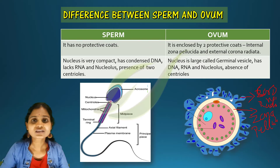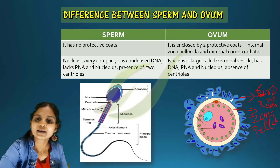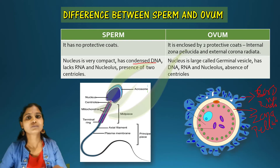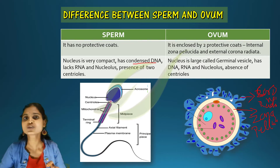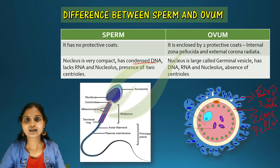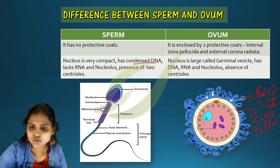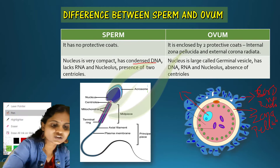The nucleus of the sperm is very compact — completely condensed — and it consists of DNA. The sperm lacks RNA and has no nucleolus, but two centrioles are present. In the case of ovum, there is a large nucleus which is called the germinal vesicle.